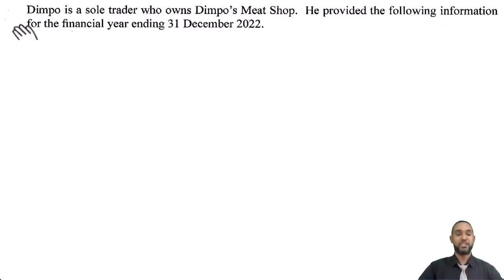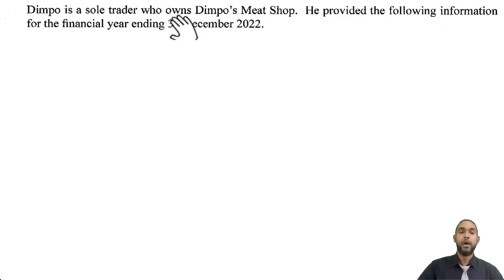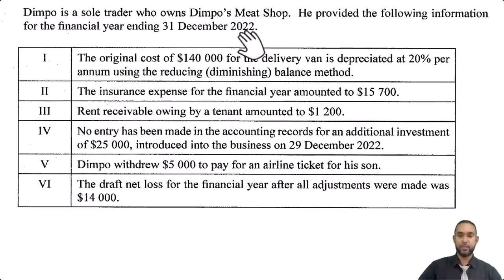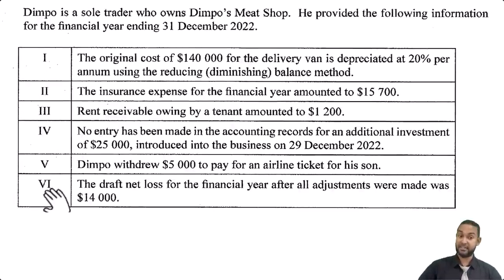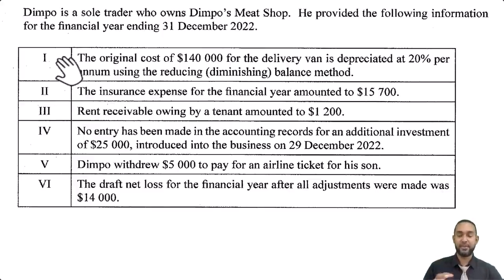We begin as usual by reading the question. It says Dimpo is a sole trader who owns Dimpo's meat shop. He provided the following information for the financial year ending 31st December 2022. There are six items here, and rather than read through all six and then go back to the beginning, I'm going to deal with them one at a time and move sequentially.